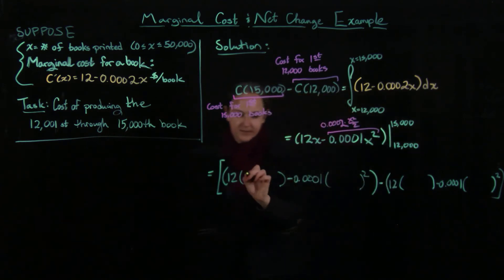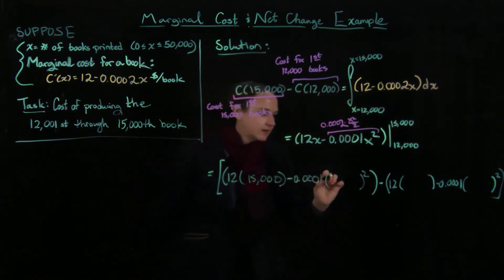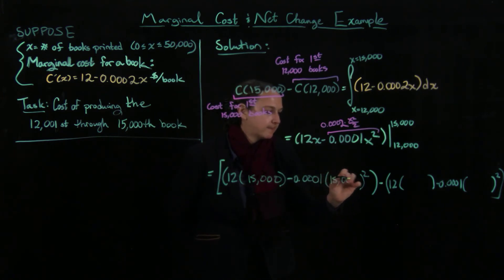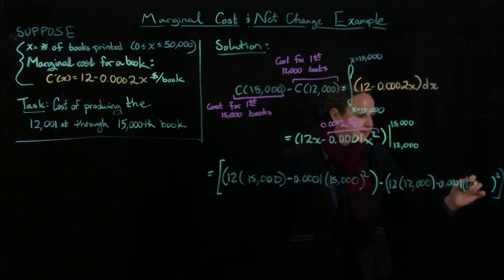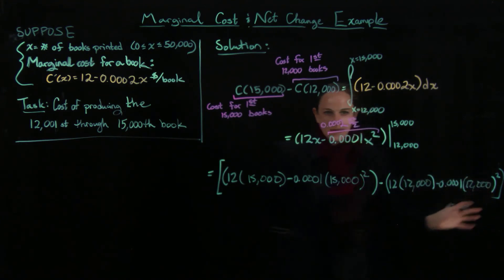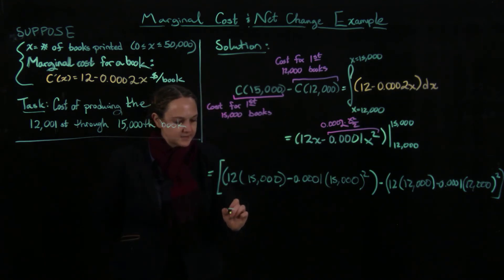And then I can go ahead and put in these bounds. So in the first one I have to put in 15,000 twice, then I have to put in 12,000 twice. And then it's always good to have computed things ahead of time. This just ends up being $27,900.